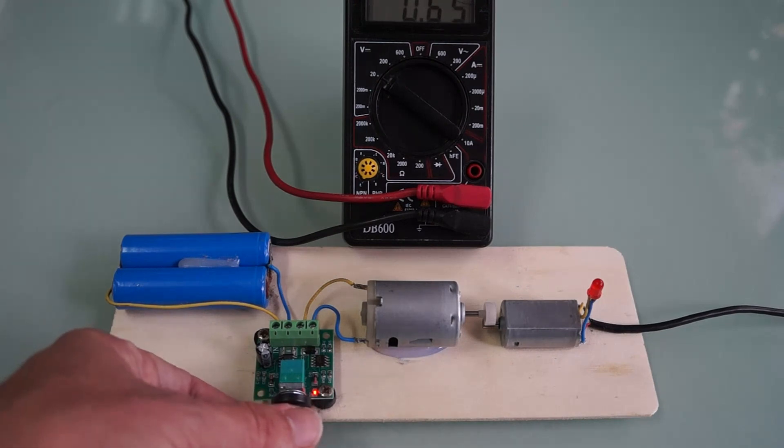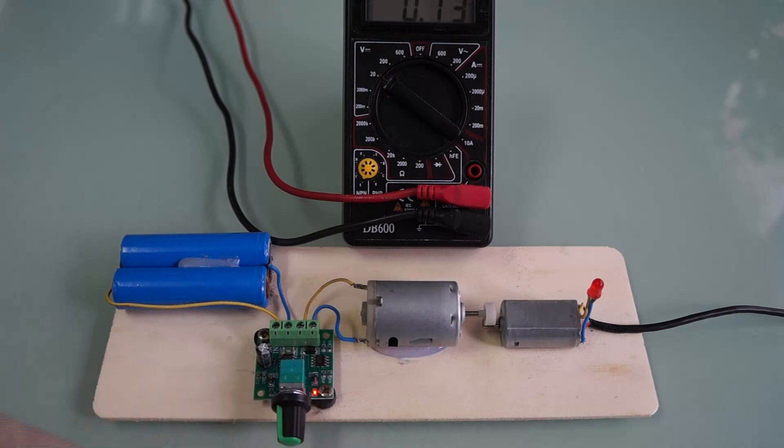In this setup, we have two coupled motors, one operating as a generator and the other driven by a battery through a voltage regulator. By adjusting the regulator, we can precisely control the motor's speed.